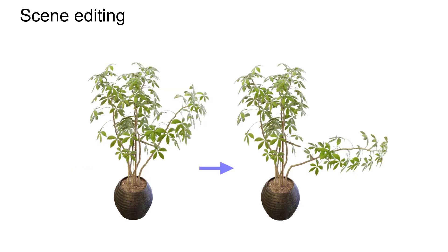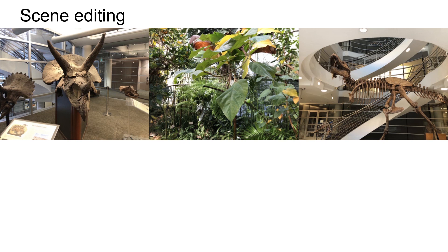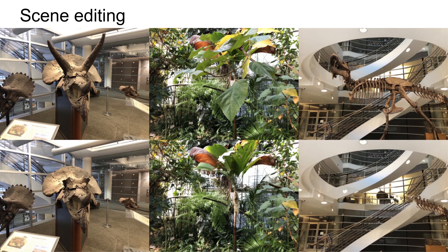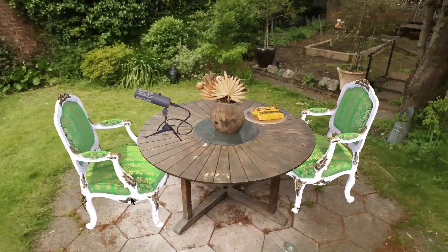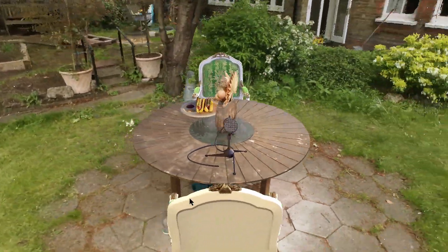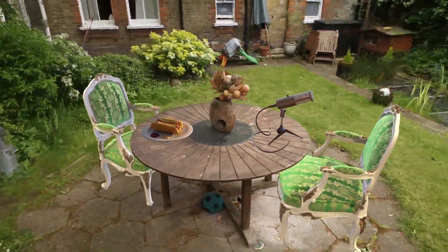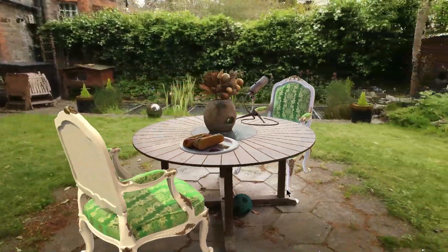The explicit mesh representation provided by our method gives us direct editing control over the NeRF objects. For example, we can bend the branch of this ficus scene by editing its triangle mesh. Similarly, we can remove the horns, the leaves, and the T-rex. We can also put different NeRF objects together. In this unbounded scene, we have put two chairs, a hot dog, and a microphone into the scene.